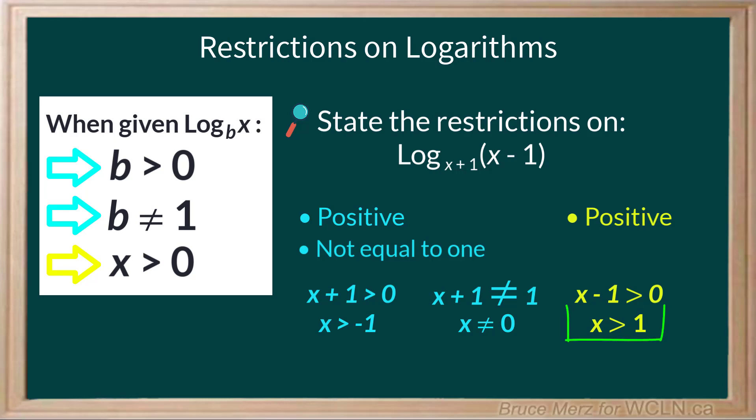However, that final condition of x is greater than 1 pretty much covers the other two. If x is greater than 1, then it's not going to be equal to 0, plus it's obviously going to be greater than negative 1. So our overall restriction is x is greater than 1.